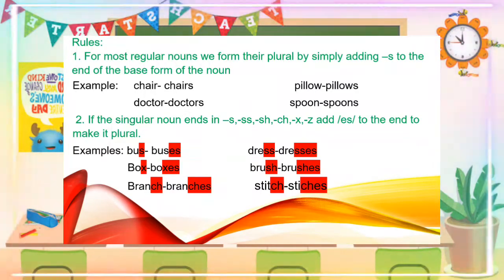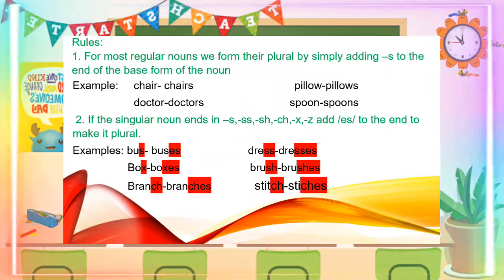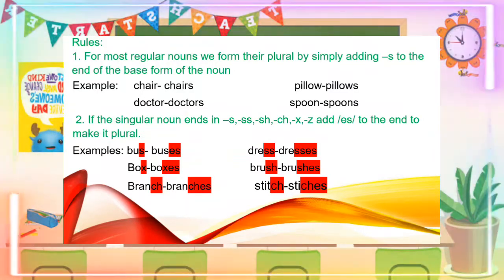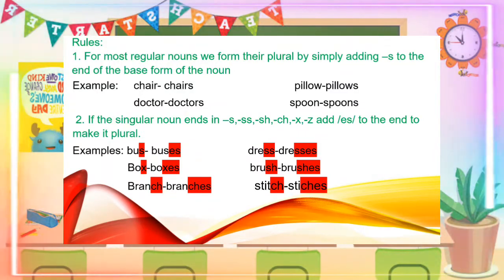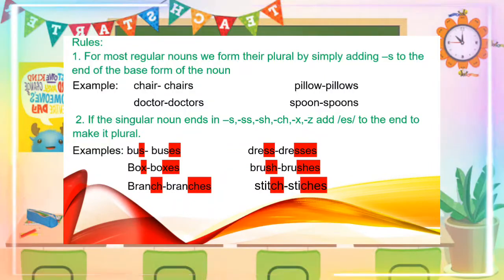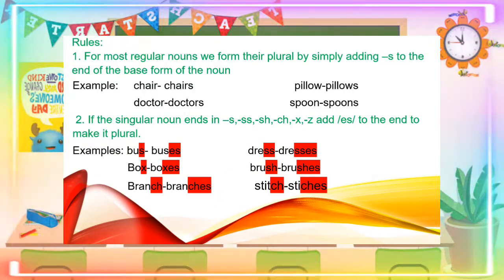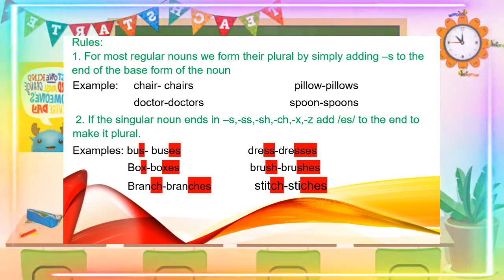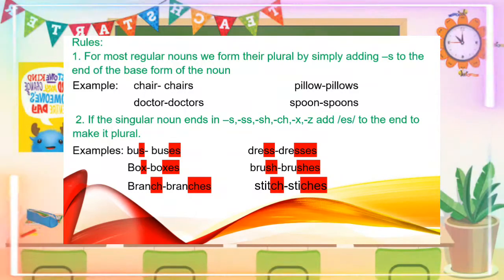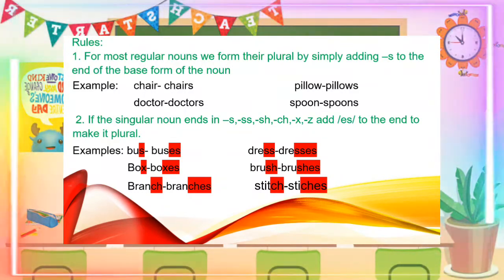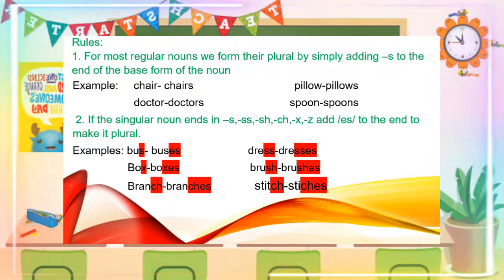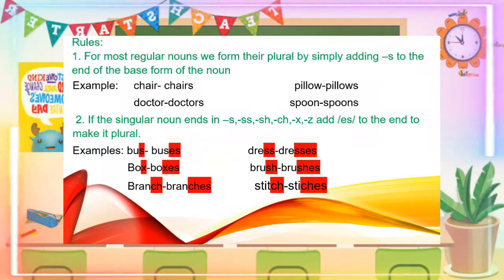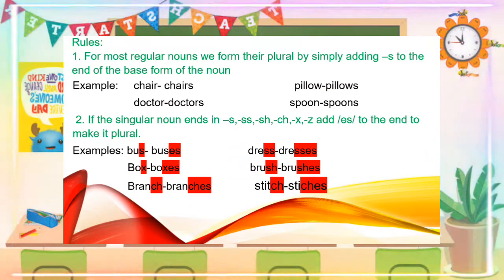Rule number two: if the singular noun ends in S, SS, SH, CH, X, or Z, simply add ES to form its plural. For example: bus, buses; box, boxes; branch, branches; dress, dresses; brush, brushes; stitch, stitches.